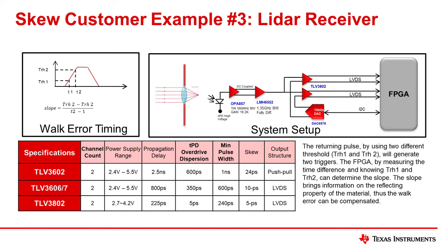One final example of skew comes back to LiDAR in the application we call walk error. Using a dual comparator, two triggers can be set up so that when the return signal is detected, it will trigger both channels. One comparator is set at a lower threshold and will trigger slightly before the other, which is set at a higher threshold. By comparing the timing difference between the two channels, a processor can determine the walk error or the relative amplitude and thus understand the type of surface detected. It is critical that the skew be negligible, as the measurement relies on two very small timing differences to calculate that walk error.